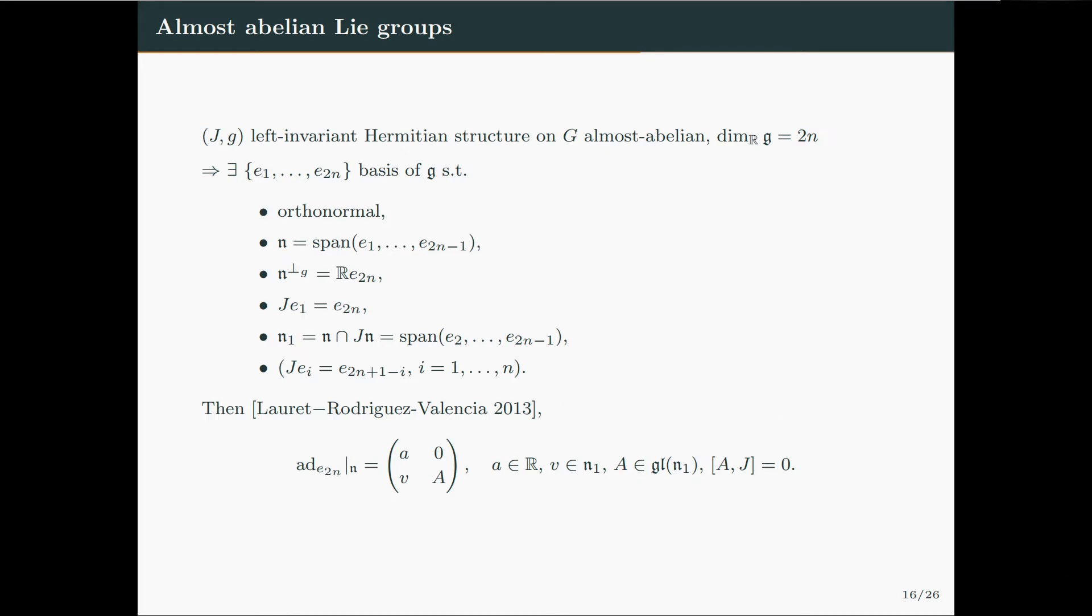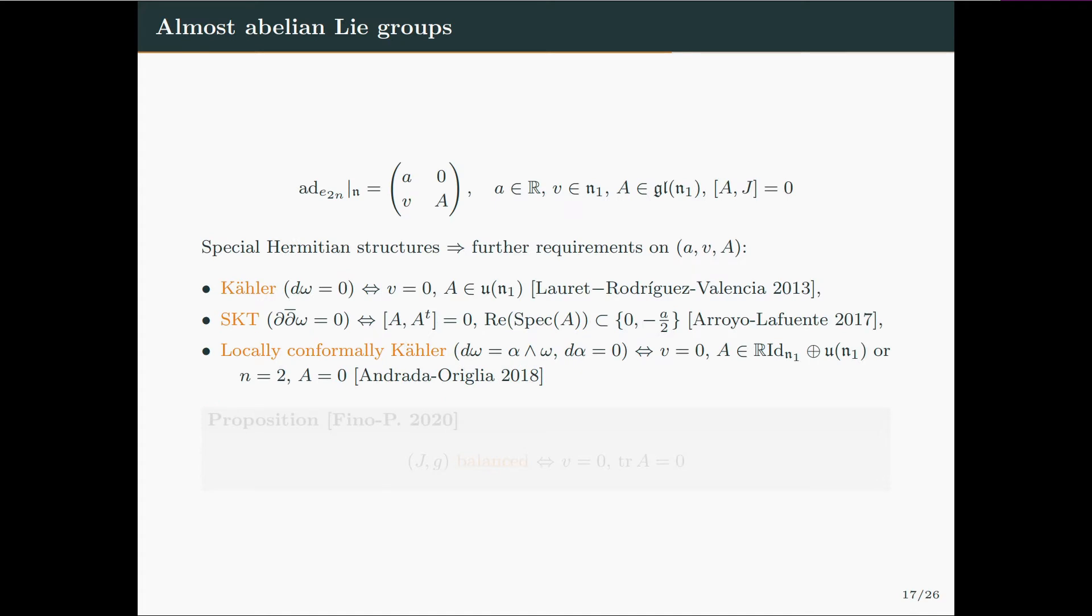Then Lauret and Rodriguez Valencia in 2013 proved that the adjoint action of e_2n, which is transverse to the abelian ideal, when it is restricted to the abelian ideal, behaves in this way. So we have three pieces of algebraic data: a real number a, a vector v, and an endomorphism of n_1, which is this space over here. This cannot just be any endomorphism, but it has to be, in particular, an endomorphism which commutes with J.